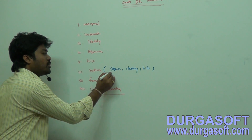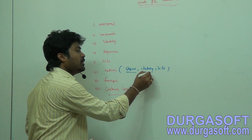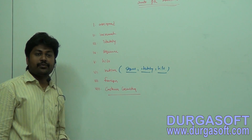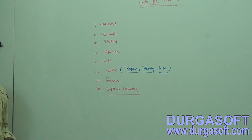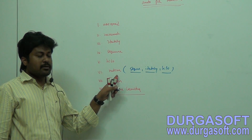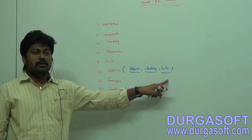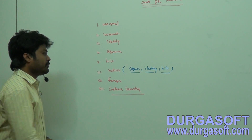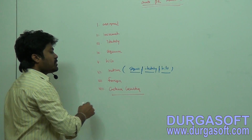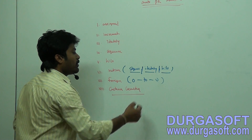If your database supports sequence, it will use sequence only. If it does not support sequence, it will go through identity. If identity is not supported, it will finally go through Hilo. So native does not have its own technique — internally it uses sequence, identity, or Hilo. In case of foreign, we have to use it for a one-to-one relationship.